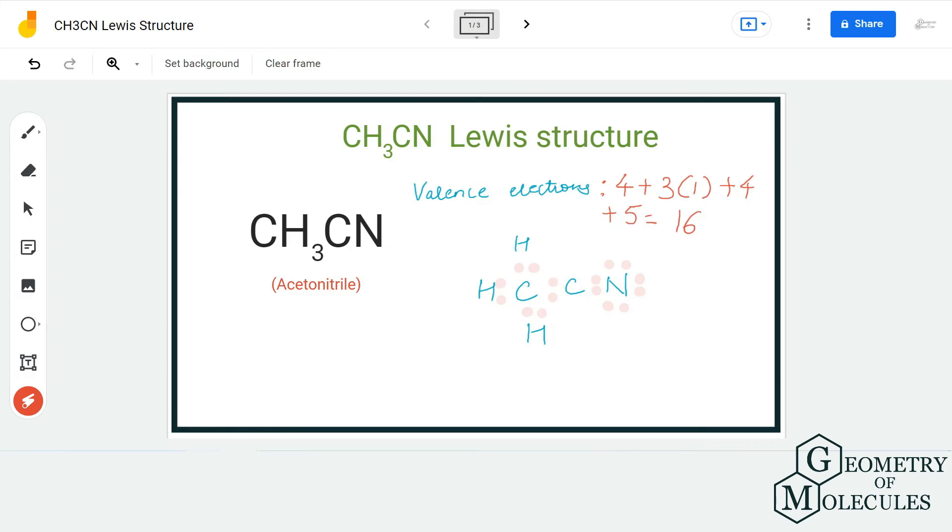To help this carbon atom have a complete octet, we are going to shift electrons from the nitrogen atom in between this carbon and nitrogen atom. I am going to shift two pairs of electrons. As a result, a triple bond forms between this carbon and nitrogen atom. That is fine because doing that, both the carbon and nitrogen atoms have complete octets.